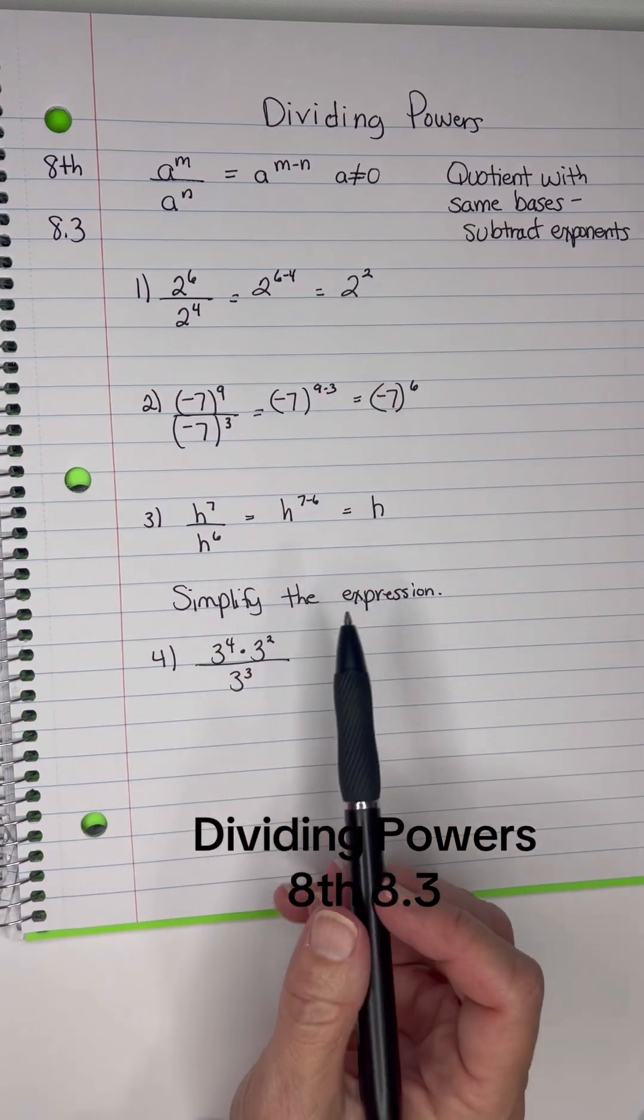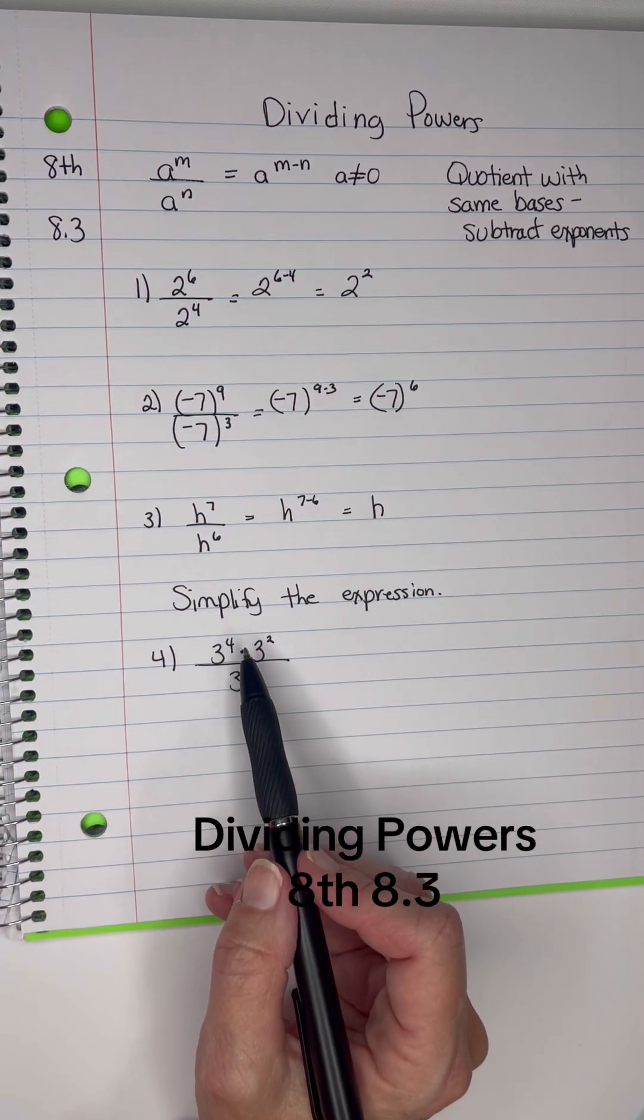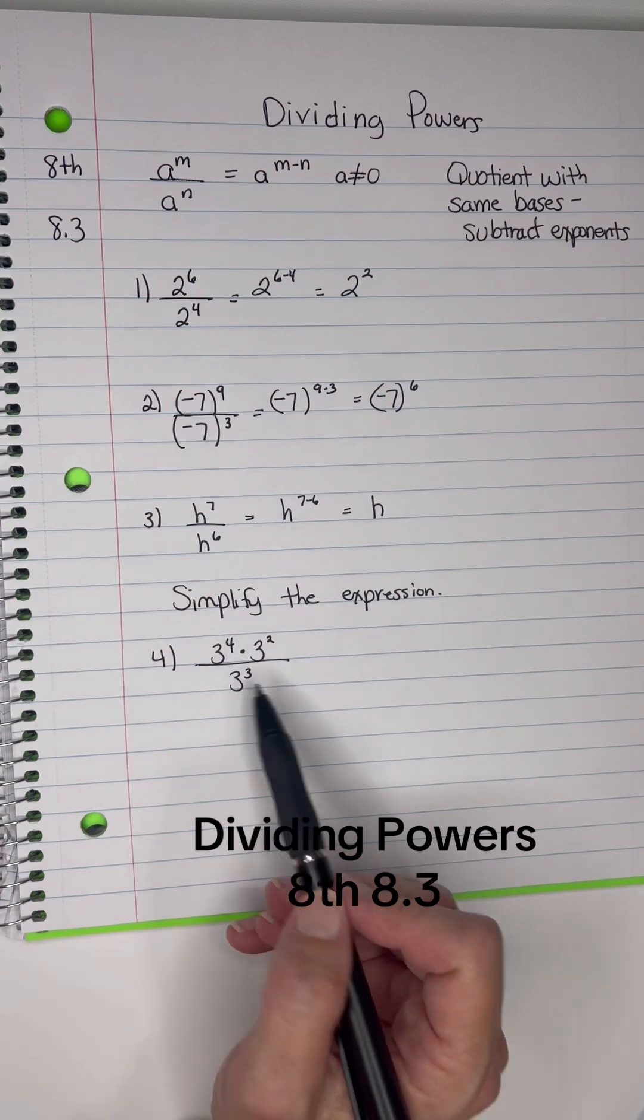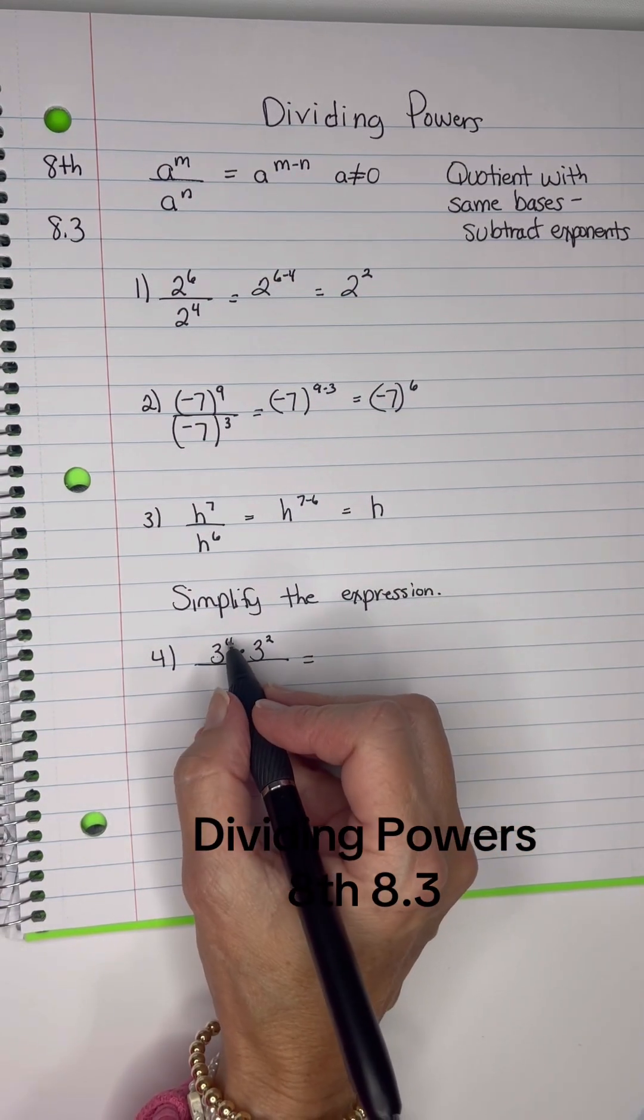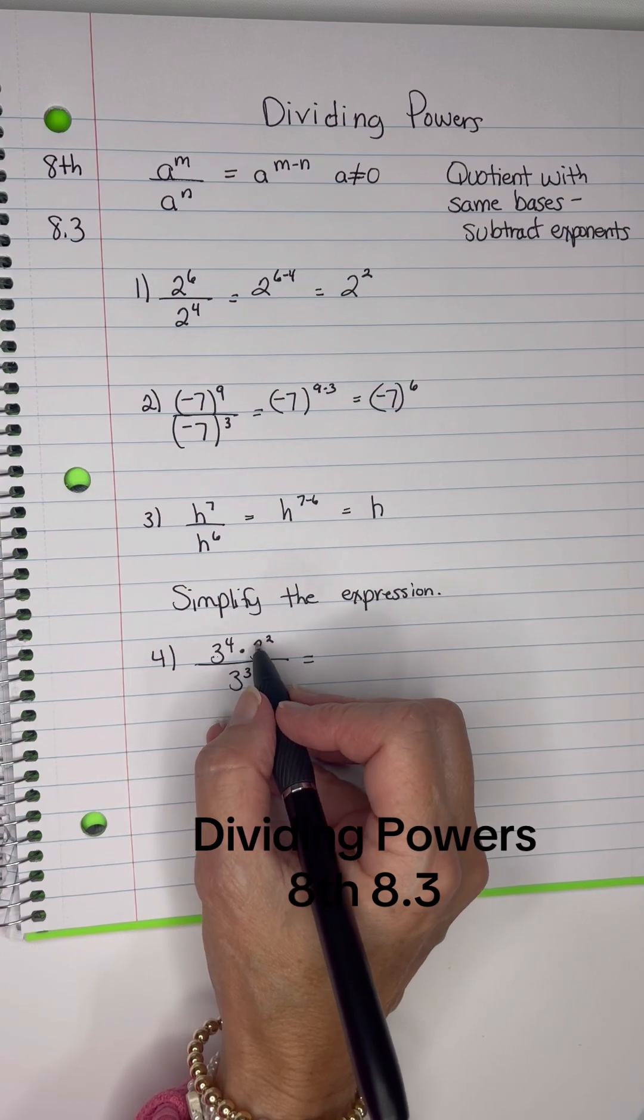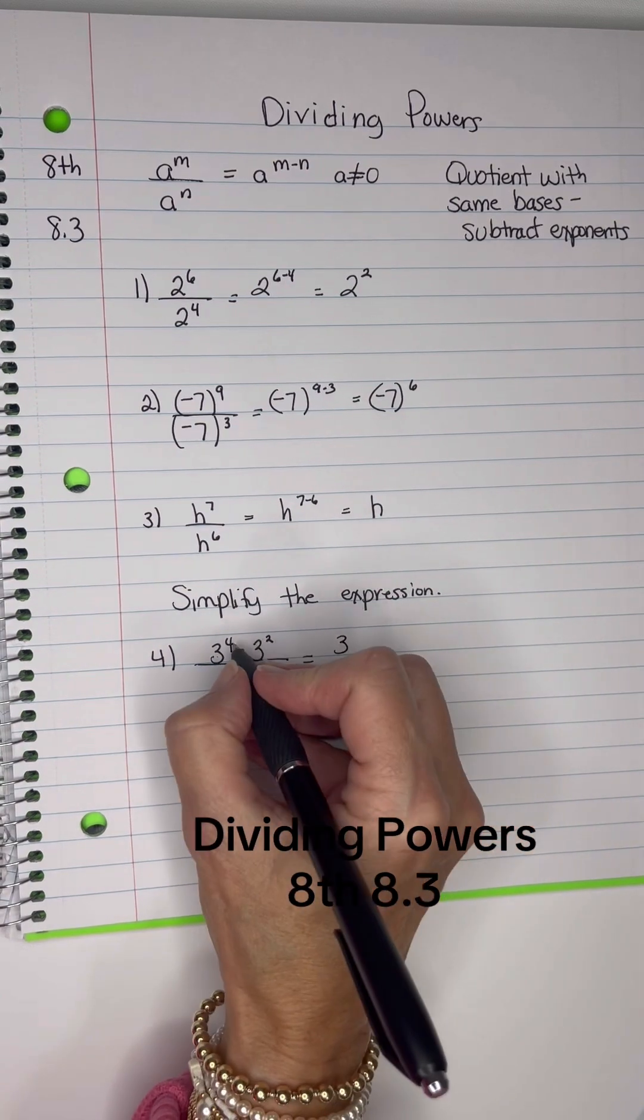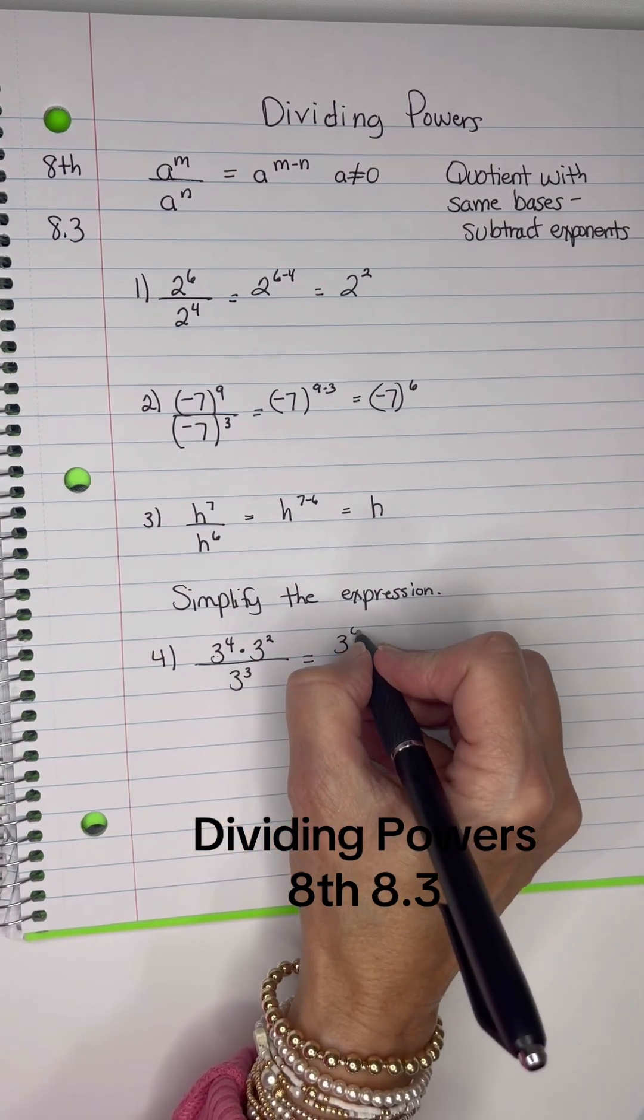Now let's look at doing some of the multiplying powers and the dividing powers. On the top, I have 3 to the 4th times 3 squared, the same base. So I will add the exponents, and 4 plus 2 is 6.